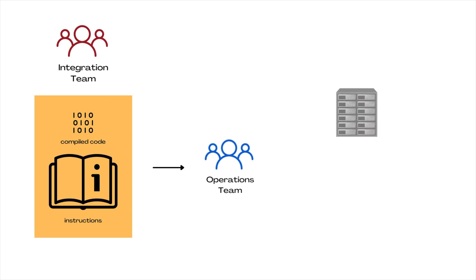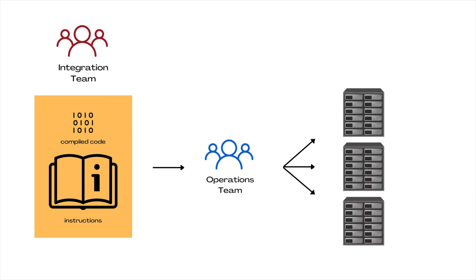The operations team installs the software to various environments: a dev/test environment for QA to do all sorts of end-to-end tests, a staging environment for user acceptance testing, and finally — when all tests are done — to the production environment. Once available in production, the product or product update is available for end users or customers to use. This is the typical process that most scrum teams follow in various organizations.